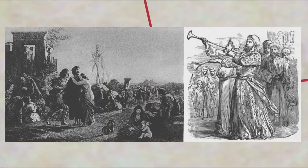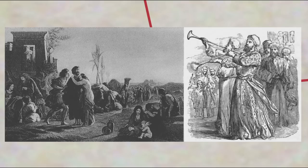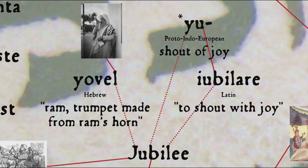According to Leviticus, in the Jubilee year you're supposed to sound the trumpet, and slaves and prisoners would be freed, debts forgiven, and everyone was to return to their property. Traditionally the word Jubilee was thought to come from the Hebrew word yavul, meaning 'ram' or the trumpet made from a ram's horn. However, it's also been suggested it might come from an Indo-European source borrowed into Hebrew, from the root 'u,' a shout for joy — also found in English yowl and Latin jubilare, 'to shout with joy' — or that at least Latin jubilare influenced the word Jubilee later on.